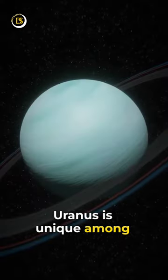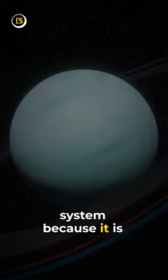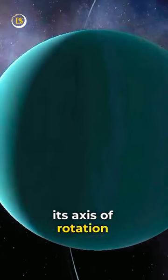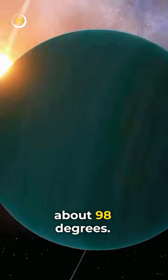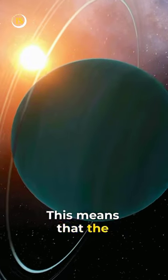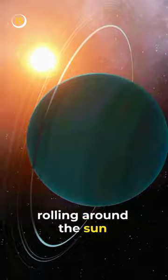Uranus is unique among the planets in our solar system because it is tilted on its side, with its axis of rotation tilted at an angle of about 98 degrees. This means that the planet appears to be rolling around the Sun on its side.